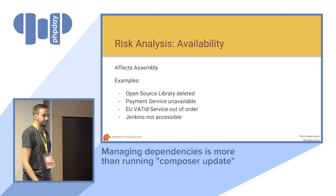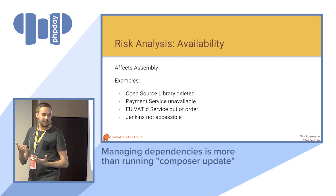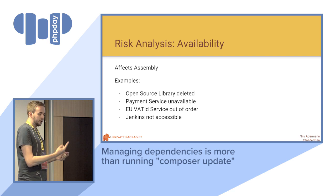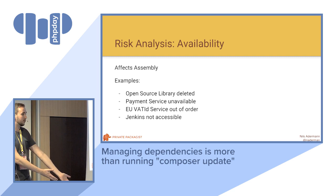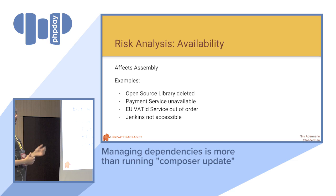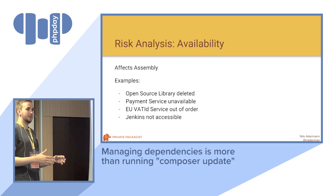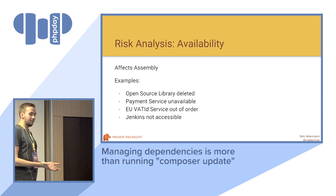Now I want to go through the different types of risks and what you can do about them. The first type of risk we're going to look at is availability. This usually affects the assembly part — if something isn't available for you to install, you can't install it. This may be things like an open source library you depend on got deleted. This happened famously in the JavaScript world where everything depended on this one thing and nobody really thought about what certainty do I have that this thing is going to remain available.